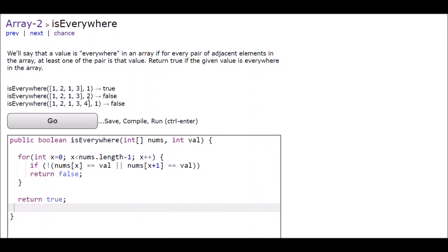In the second case, it returned false because although two is in the first pair of values and the second pair, it's not in the third pair of values. So it returned false.